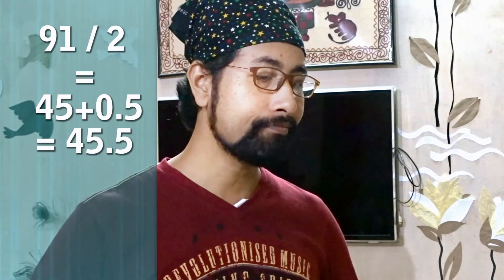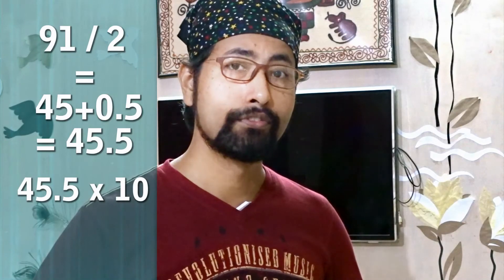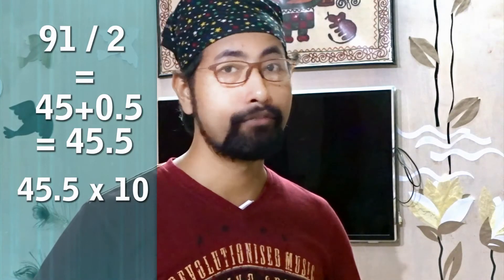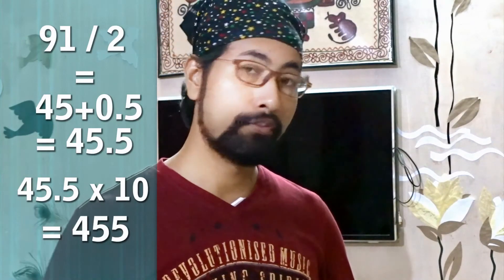Let's try with an odd number, like 91. What is half of 90? 45. And half of 1 is 0.5. So half of 91 is 45.5, into 10 is equal to 455. If you know the multiplication of 10, then it's great and it will be easier. If you don't know, it will be a little tough. If you want to learn, click this link and get it easily.